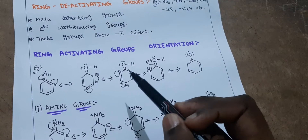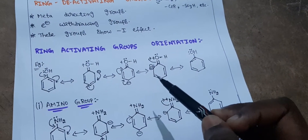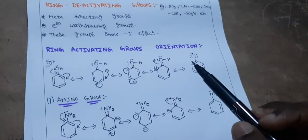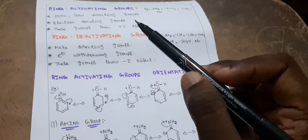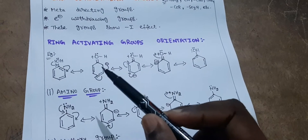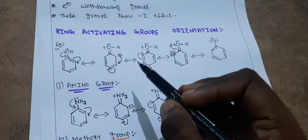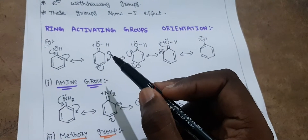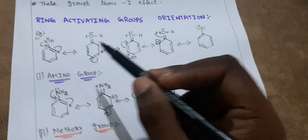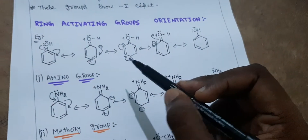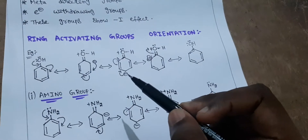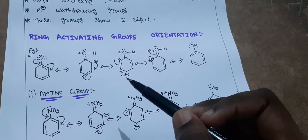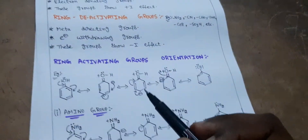Through these resonance structures, the negative charge shifts around the ring and positive charges appear at various positions. These groups are known as ortho-para directing groups because of the high density of electrons at ortho and para positions. Where a negative charge is present, more electrons are present. Looking at all the resonance structures, electron density is concentrated at the ortho, ortho, and para positions, while at the meta position it is very minimal.